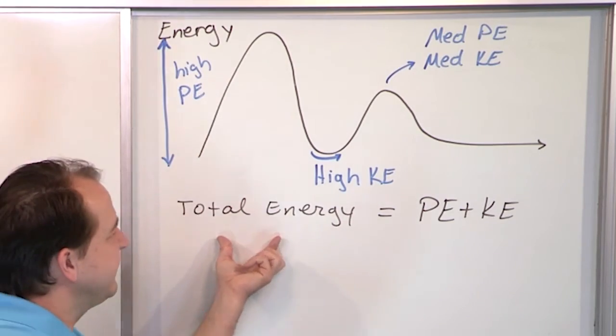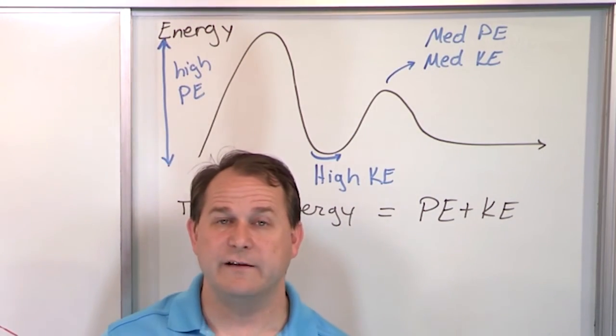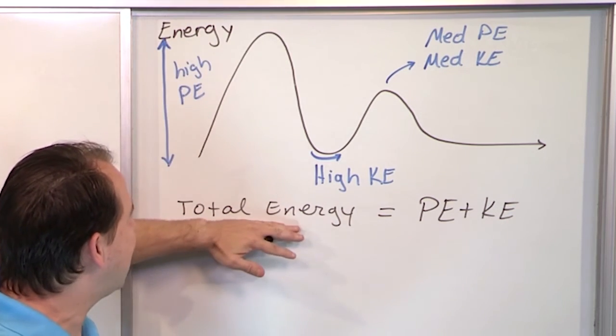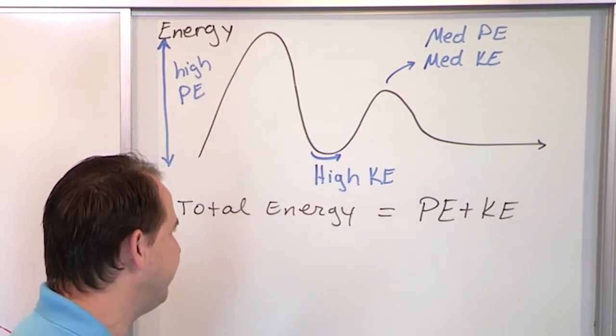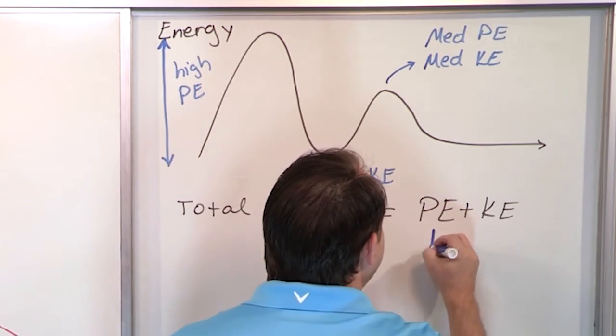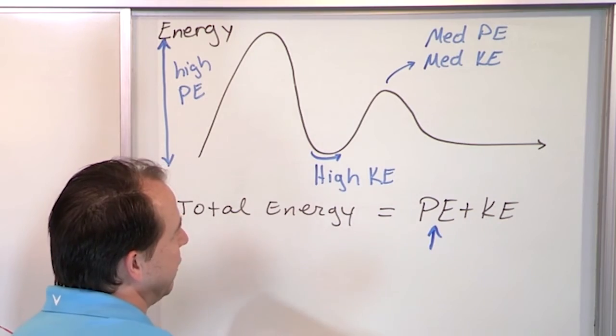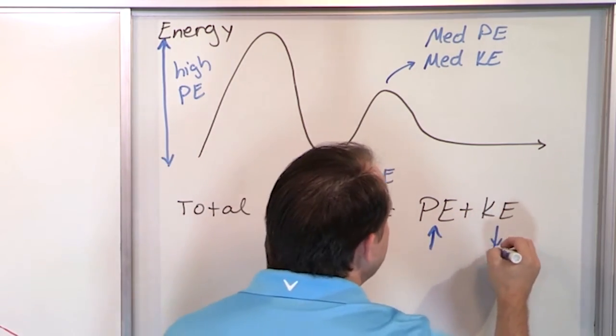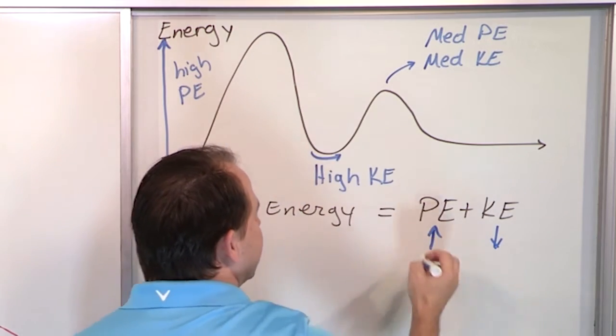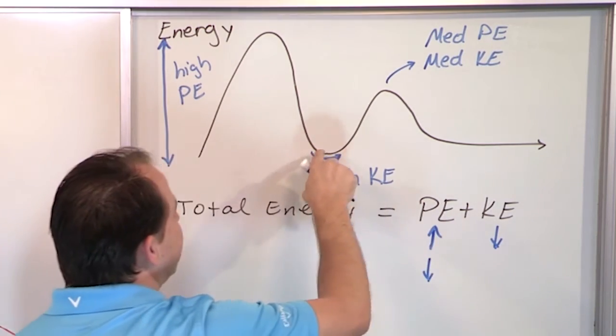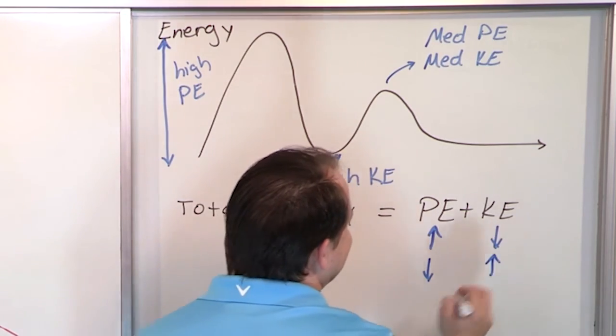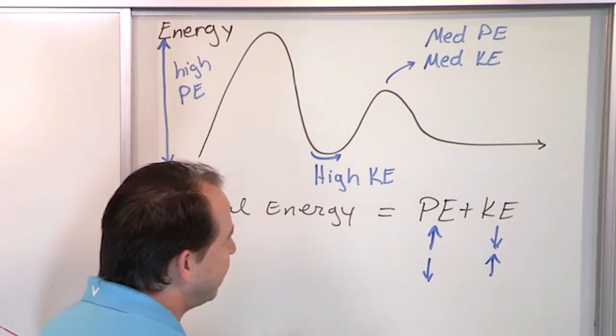And the total energy of the system actually doesn't change because whatever I start the system out up here at the top is how much energy I have. It's just all in potential energy form. So at the very top of the hill, I have a very high potential energy. That's what the up arrow means. And I have a very low kinetic energy up at the top here. But then when I get to the bottom here, I have a very low potential energy because I'm basically at ground level and I have a very high kinetic energy because I'm going really fast. So you see what's happening.